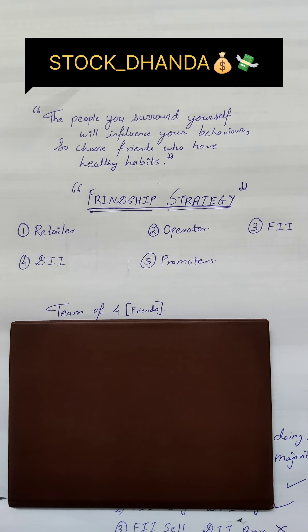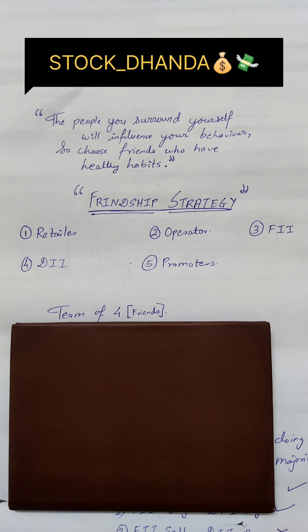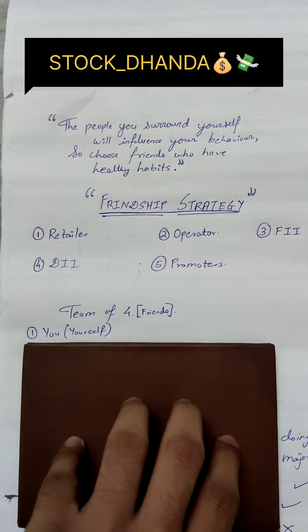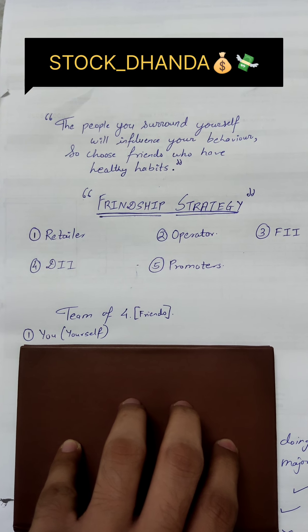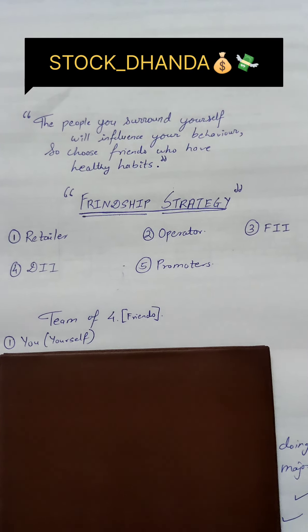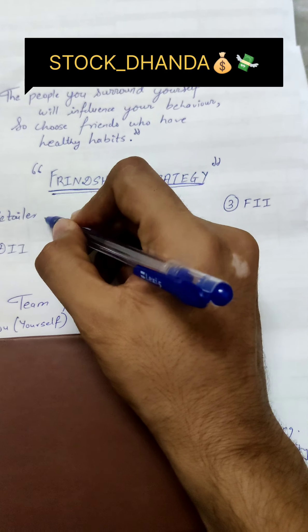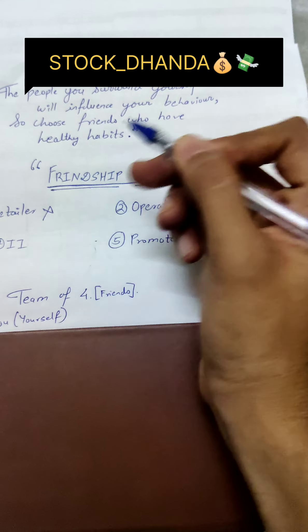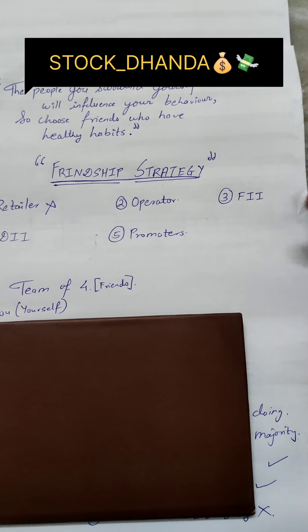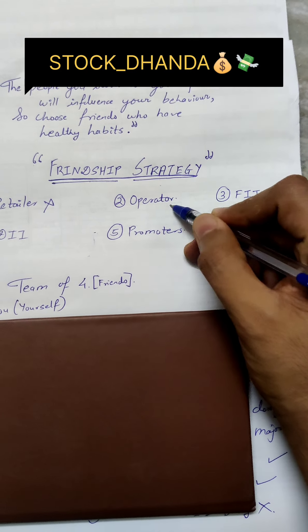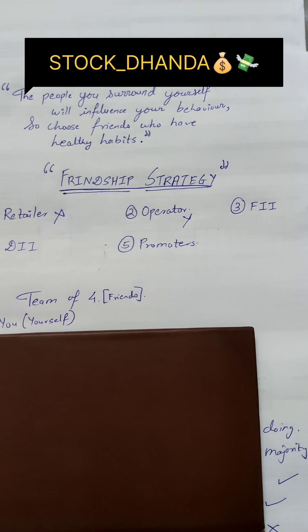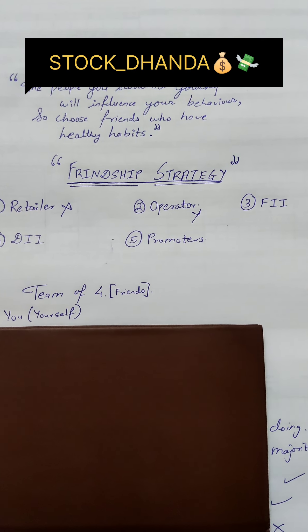So let us make a team of four members. First member will be you, yourself. Second — retailer? No, because is ke paas zyada data nahi hai. Operator? No, because yeh dhogla aadmi hai — yeh kabhi bhi maal bejke chala sakta hai.